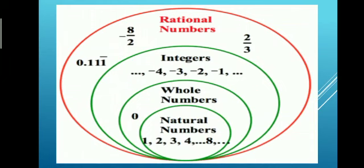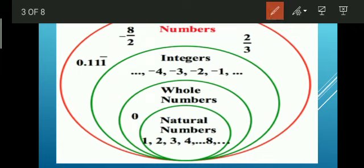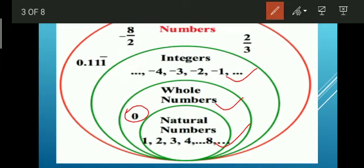Let's see how the number system evolved. First we have natural numbers — the counting numbers: 1, 2, 3, 4, 5. If we add 0 to natural numbers, we get whole numbers: 0, 1, 2, 3, 4... If we add negative numbers to whole numbers, we get integers — which include natural numbers, negative numbers, and zero.